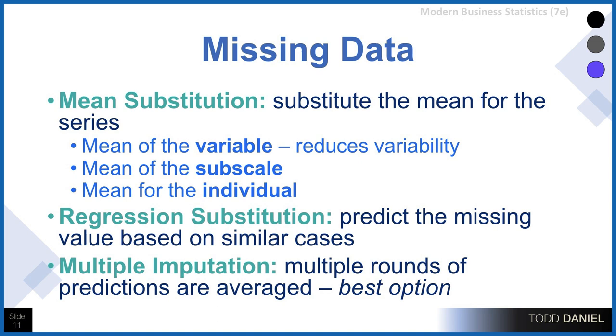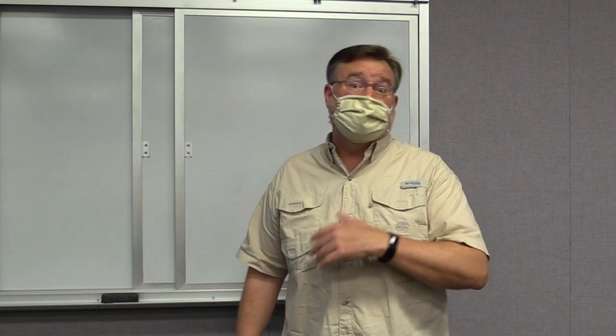Regression substitution is one better option — you create a regression equation and use that number as the missing variable value. Or we can use multiple imputation, where we have multiple rounds of predictions that are averaged to give us a single score. This is the best and most desirable way to replace missing data, but it takes a lot of time and work and is difficult to do depending on the type of software you're using. So it is a gold standard, but it is pretty cumbersome to get to these missing data points using multiple imputation.